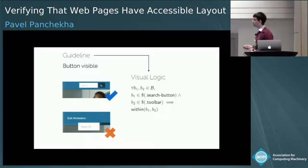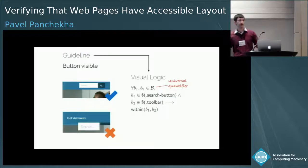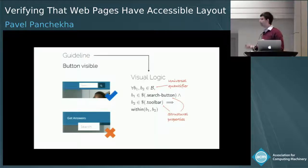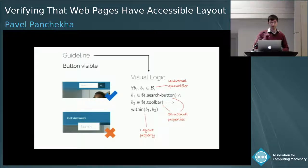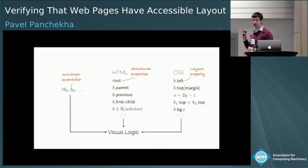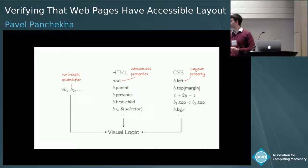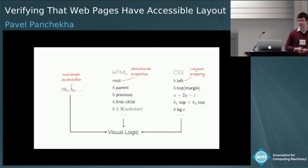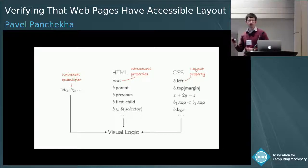In this assertion, we've got some universal quantification that introduces boxes of interest, some structural properties that relate to the way the page is structured — finding the search button in the toolbar — and also some layout properties that talk about the eventual geometry of the page when rendered. These are the three things you get with visual logic: universal quantification, structural properties you can think of as discussing the page HTML, and layout properties you can think of as discussing the CSS. We've built this logic and encoded a lot of real-world usability and accessibility guidelines into it.